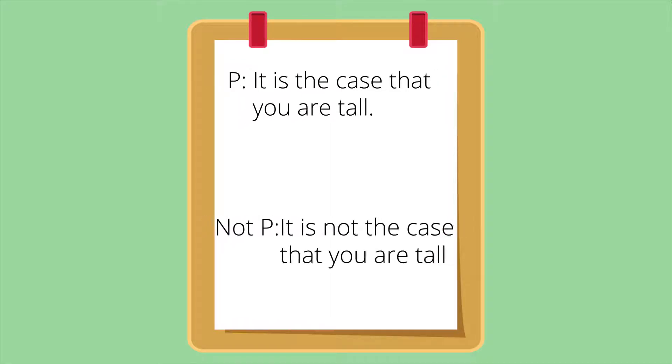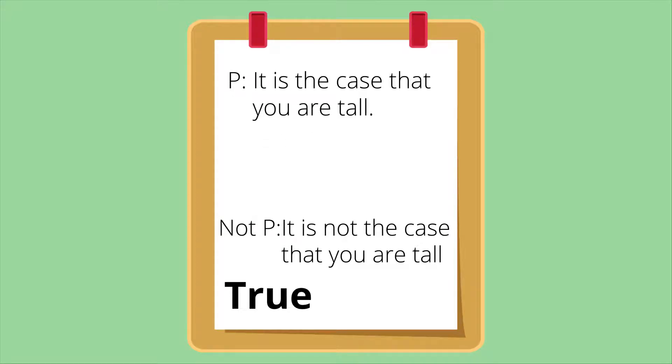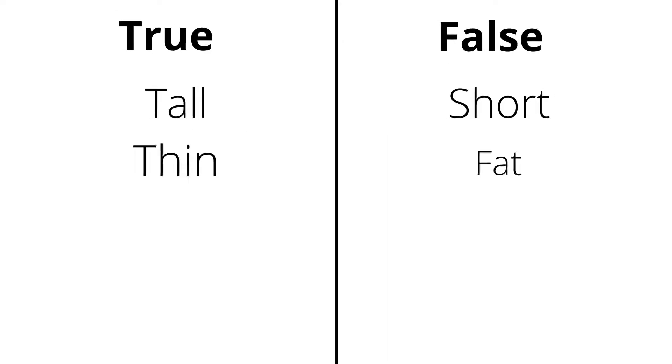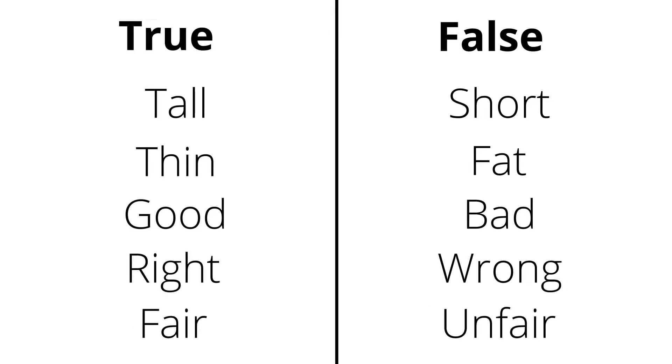For example, either it is the case that you are tall or it is the case that you are not tall must be true. The principle of bivalence is an essential principle of logic, but some have criticized it for not correctly capturing the shades of gray in certain statements. According to these critics, not all statements are either true or false — this is especially apparent when we think about vague concepts such as tall, which don't fall into clear categories.